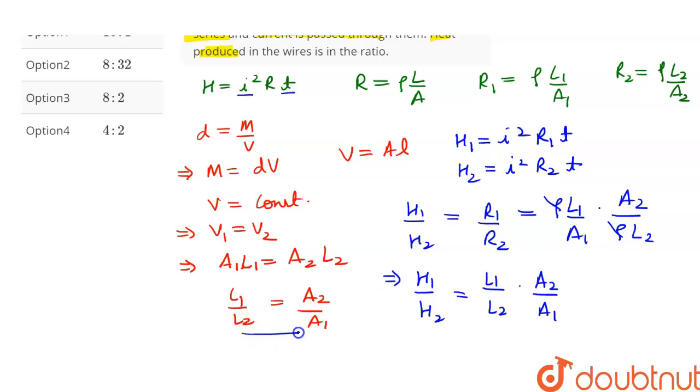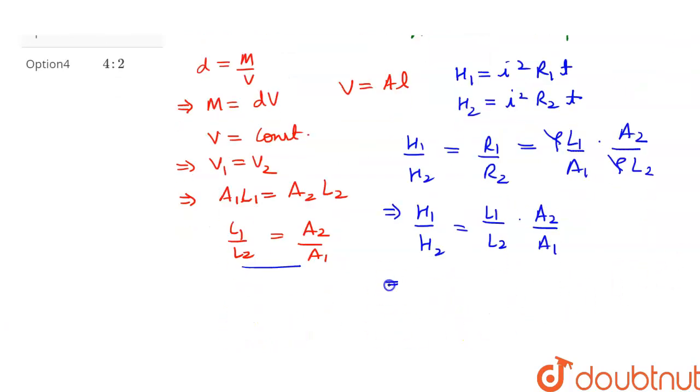Let's substitute the value of L₁/L₂ from here in this equation. This will give us H₁/H₂ = A₂²/A₁². This can be written as (A₂/A₁)².